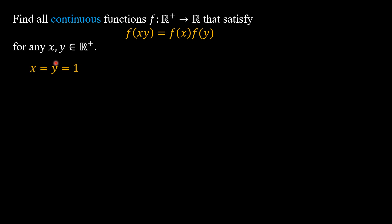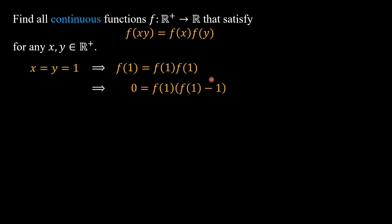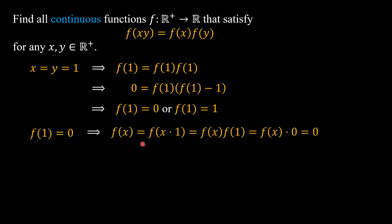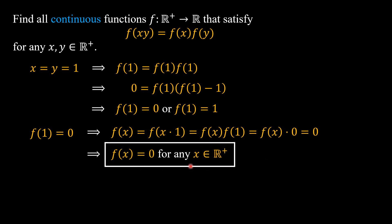To begin, if we put x = y = 1 into the equation we have f(1) = f(1)·f(1). Factoring, we get f(1) = 0 or f(1) = 1. In the case f(1) = 0, we have f(x) = f(x·1) = f(x)·f(1) = f(x)·0 = 0. This is true for any positive real number x, and it is easy to check that f(x) = 0 for any positive real number x is a solution.